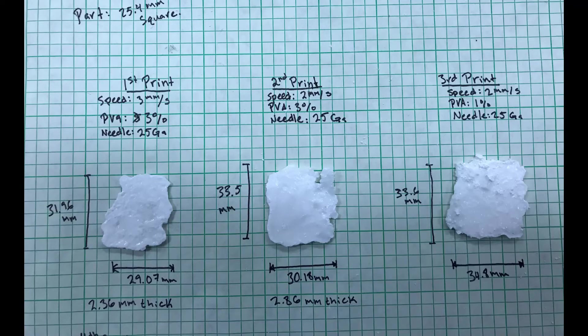From here, test prints were done to dial in printer settings. These printer settings consist of printer speed, percent PVA binder, and the amount of binder being applied.